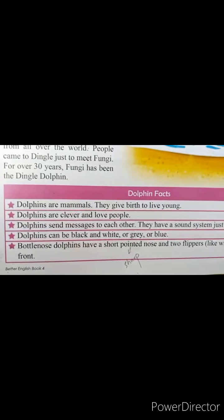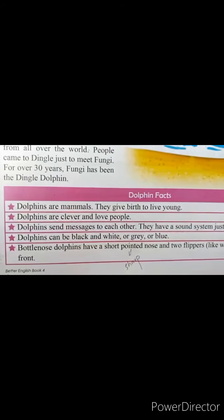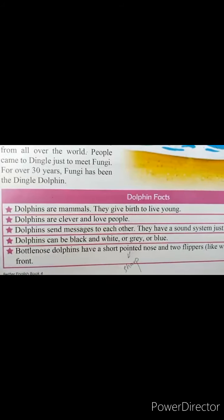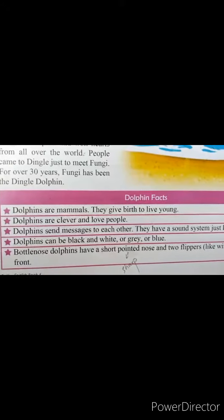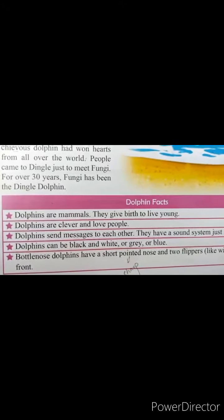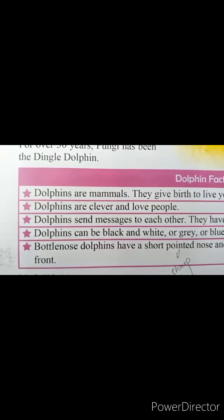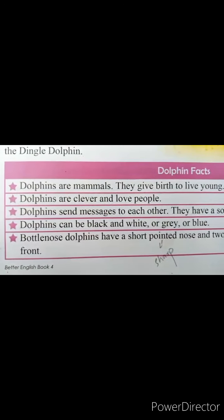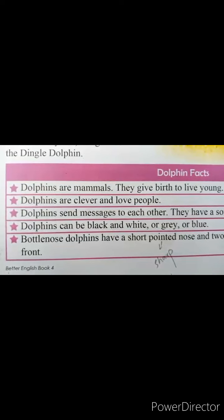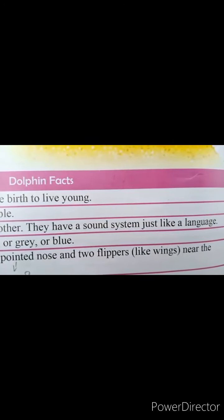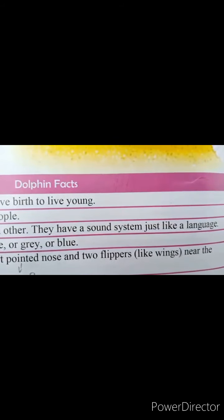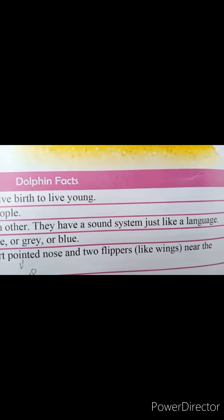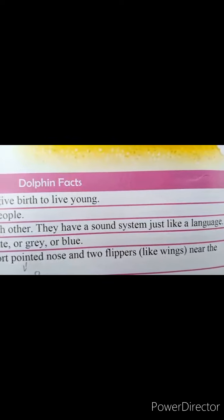Students, here we have some information about dolphins. Dolphins are mammals — they give birth to live young. Mammals un janwaron ko kehte hain jo bachon ko janam dete hain. Jo janwar ande dete hain unko mammals nahi kehte. Dolphins are clever and love people. Dolphins send messages to each other — they have a sound system just like a language, through which they communicate with each other.